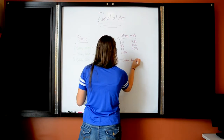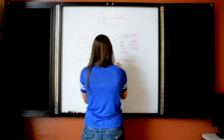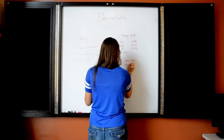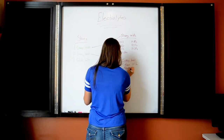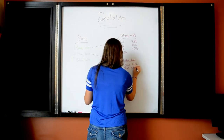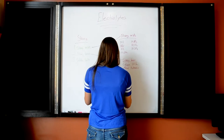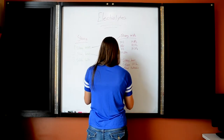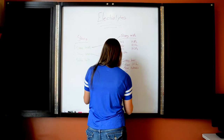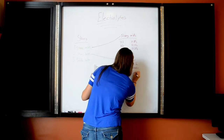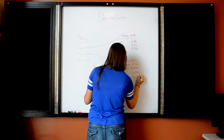For strong bases, you only have to remember that it's the column 1 and column 2 elements with metal hydroxide. Remember, hydroxide is OH⁻. So the strong bases are LiOH, NaOH, KOH, RbOH, CsOH, Ca(OH)2, Sr(OH)2, and Ba(OH)2.